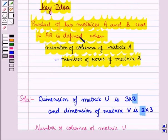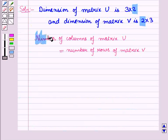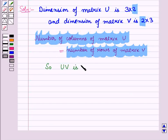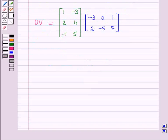From the key idea, we know that the product of two matrices AB is defined when the number of columns of matrix A is equal to the number of rows of matrix B. Here, as the number of columns of matrix U is equal to the number of rows of matrix V, the product UV is defined. Now let us find the product UV, that is, the product of the two matrices U and V.